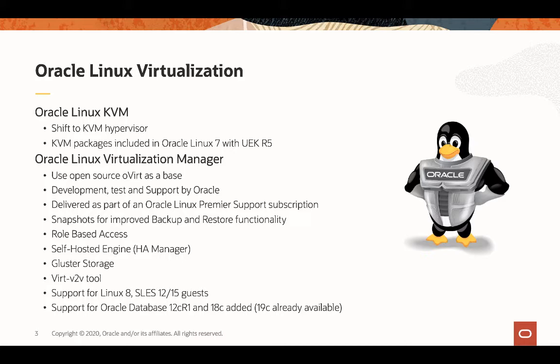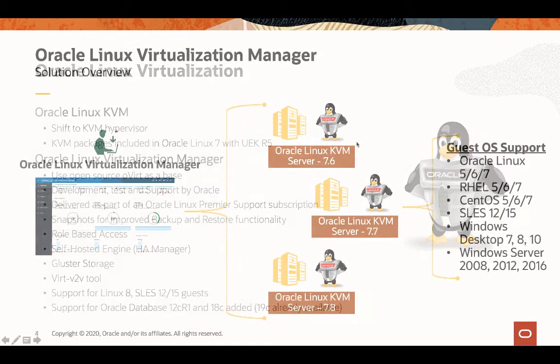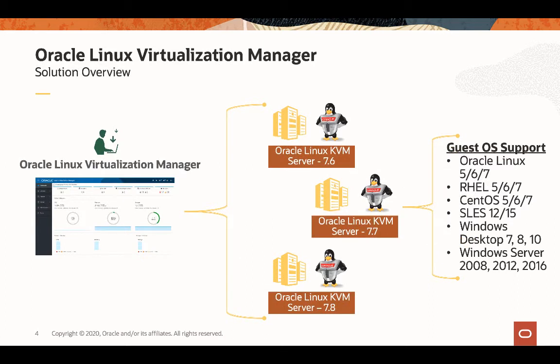19c support was already there. Here is a quick overview of the architecture. You have Oracle Linux Virtualization Manager as one unique interface — a web interface with access to REST API. By this interface you can manage Oracle Linux KVM based on Oracle Linux 7 and UEK 5, and on top of those you can run Enterprise Linux 5, 6, 7, and 8 distributions, as well as SUSE Enterprise Linux, and Microsoft Windows desktop and server releases.